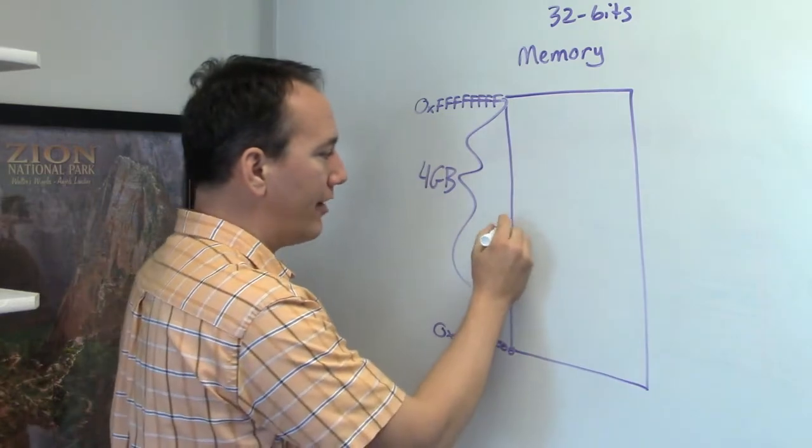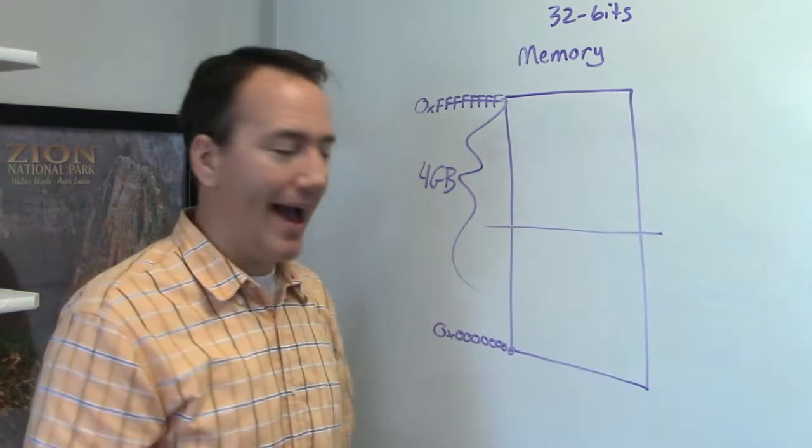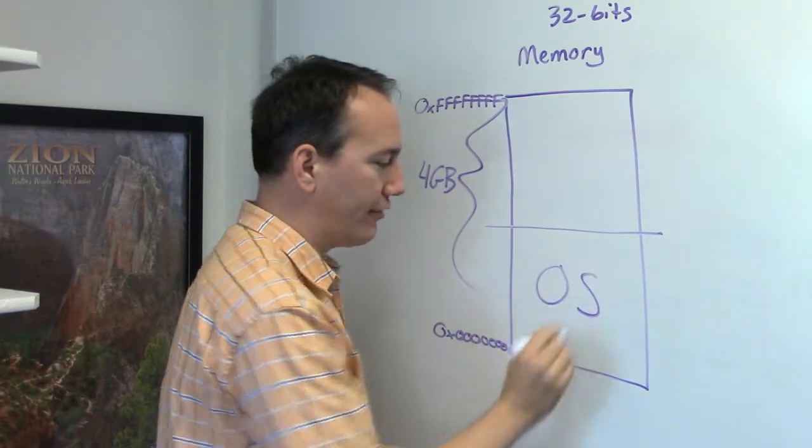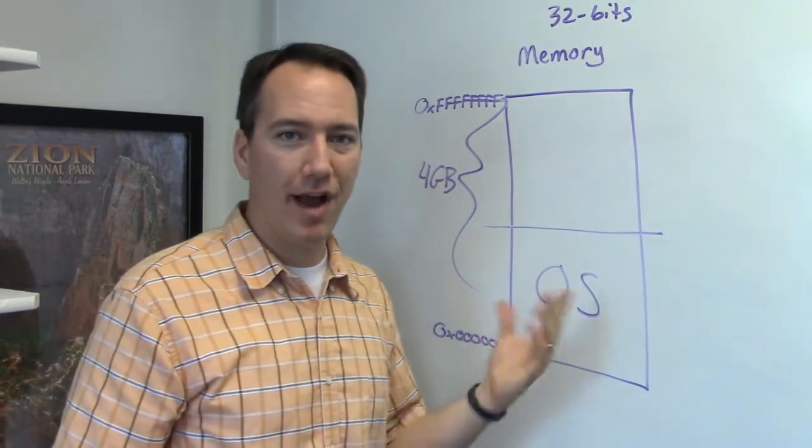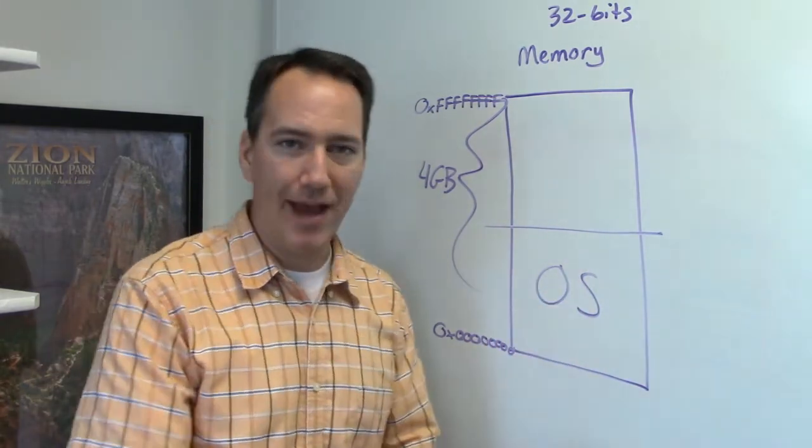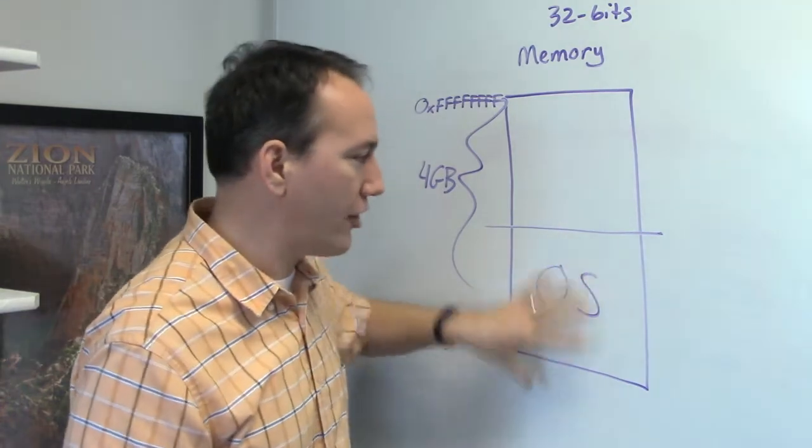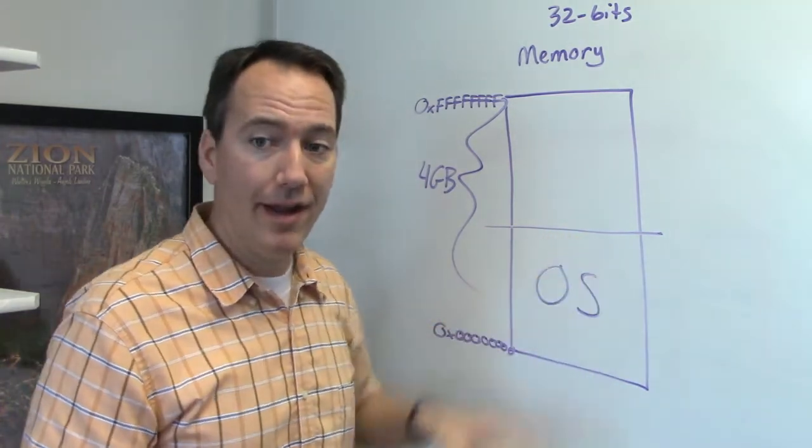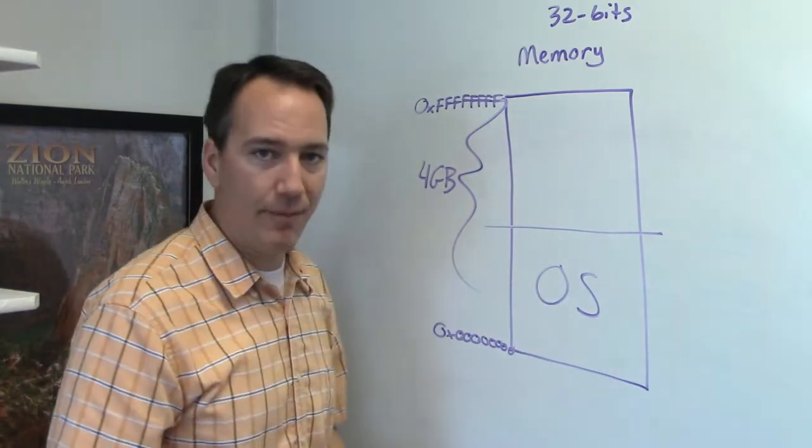Now the way memory is typically organized is it's divided in half, and this lower section here is reserved for the operating system. So the operating system with all of the memory manager, the scheduler, the dispatcher, the file manager, all that code needs to be in memory. And so we're going to just save half of memory for that.